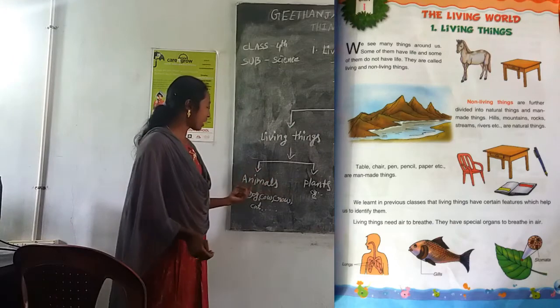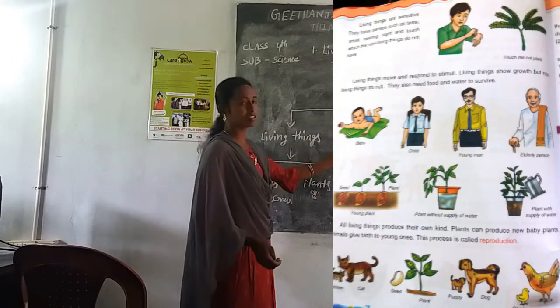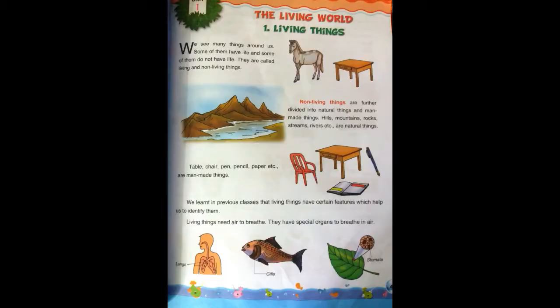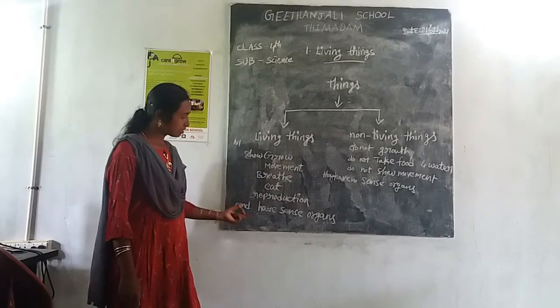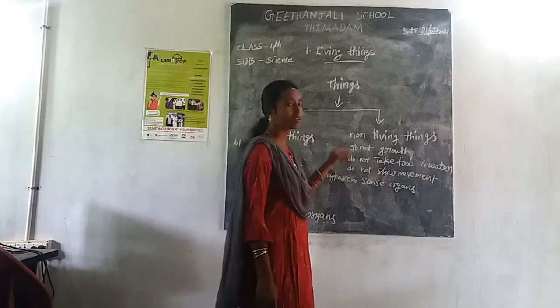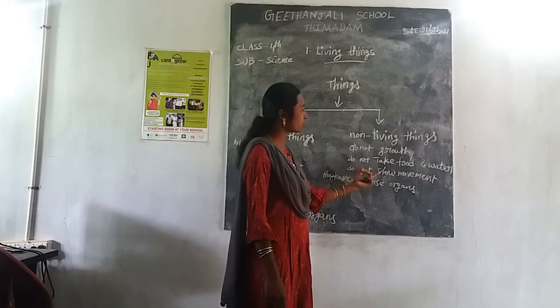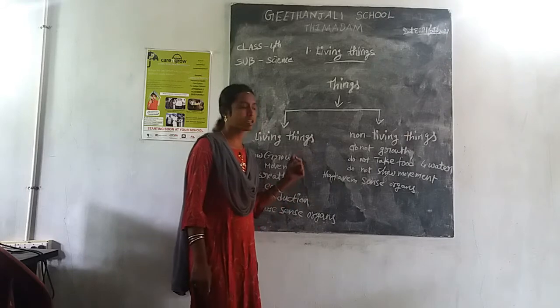Now let's look at the difference between living things and non-living things. Living things show growth, movement, breathe, take food and water, reproduction, and have sense organs. But non-living things do not grow, do not take food and water, do not show movement, and they have no sense organs.